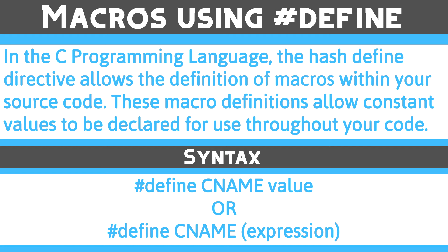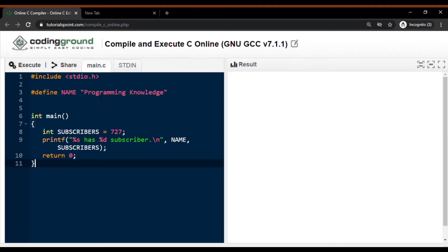In the syntax, the name is the name of the constant. Most C programmers define their constant names in uppercase, but it is not a requirement of the C language. The value is nothing but the value of the constant — an expression can be defined as the value assigned to the constant. Let's see an example: the constant called 'name' contains the value 'Programming Knowledge'.